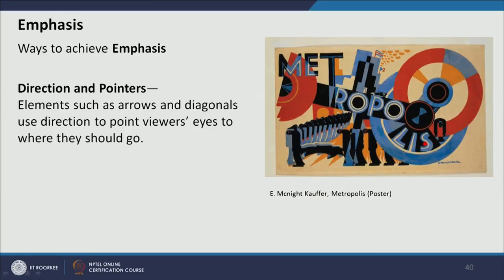Another way of creating emphasis is direction or a pointer. In a composition where two triangles point toward a circle, the circle gets the highest emphasis even though it is smaller in size and occupies less area. In another composition, the typography reads 'Metropolis,' and reading from beginning to end the eye is directed toward a circle containing the letter S. The circle and the center of the complete composition gets emphasis in this way.